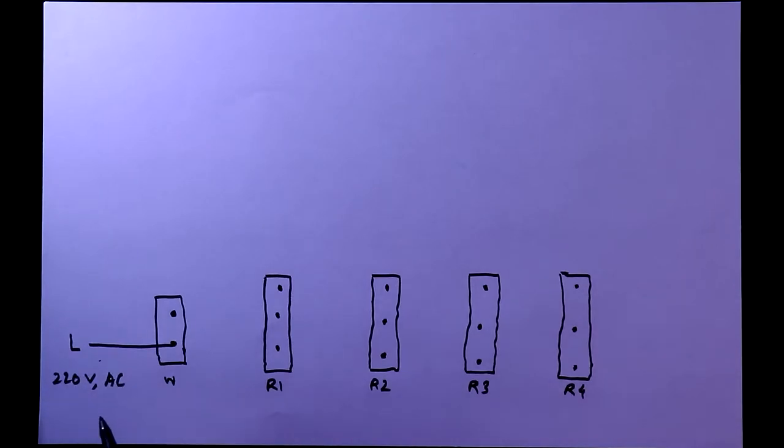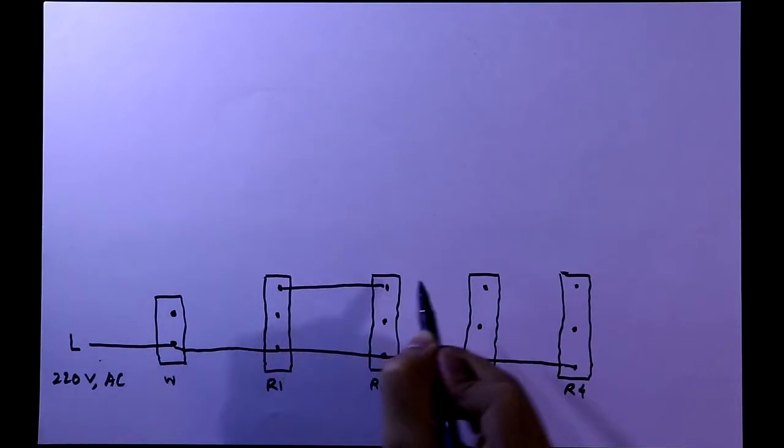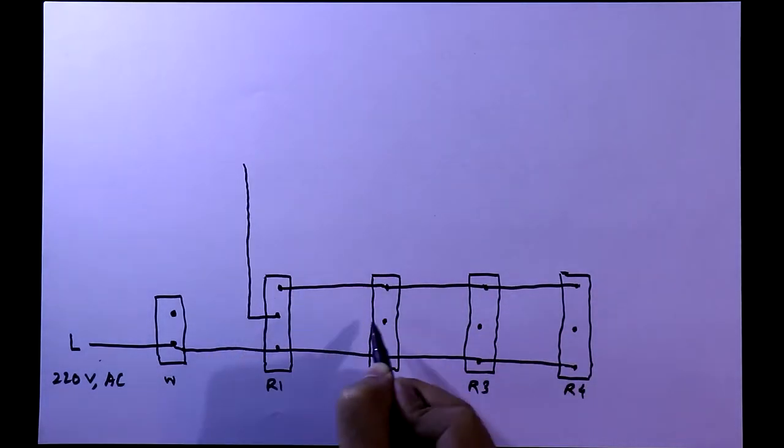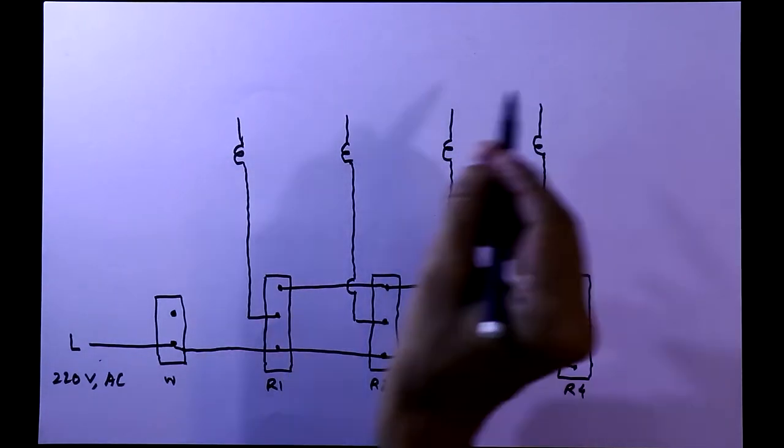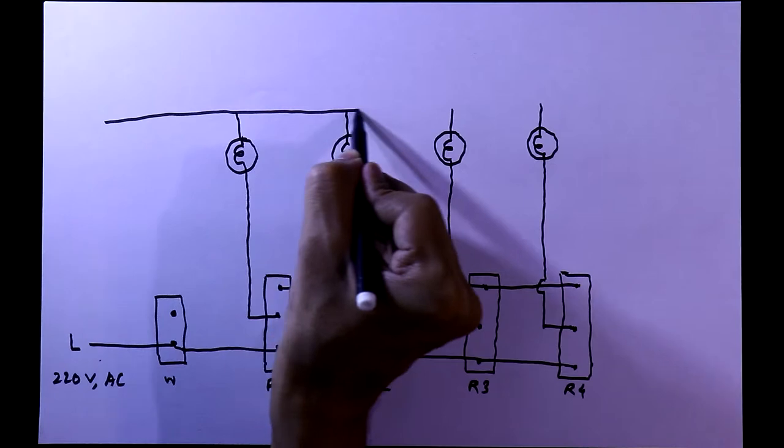With this we will connect the line, it is 220 volt AC. Then we have to connect all the down pins together and all the upper pins with the middle pin. We have to connect the bulb, these are 220 volt AC bulbs, and neutral is connected to another pin of the bulb.